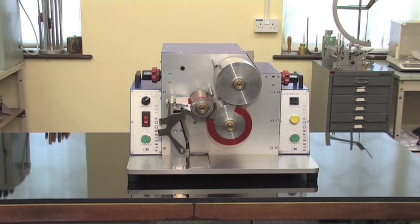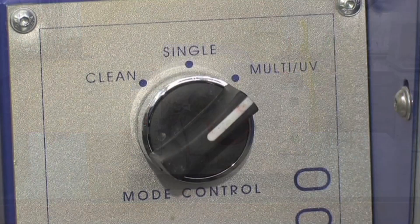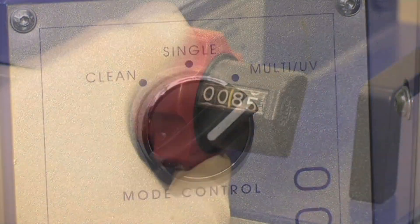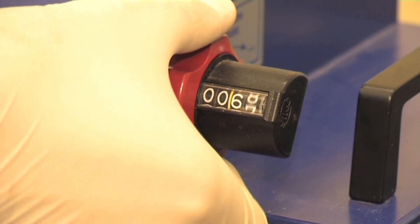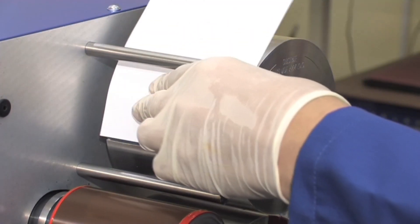RK's Flexiproof 100 is a high-speed, operator-friendly machine for quality control testing and ensuring consistency of inks and substrates over time.